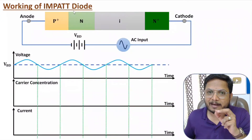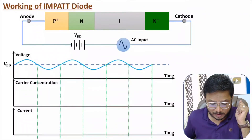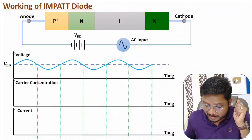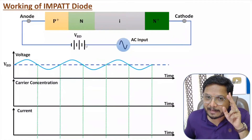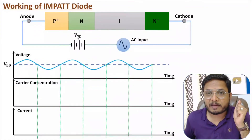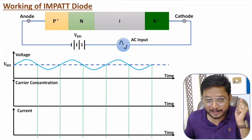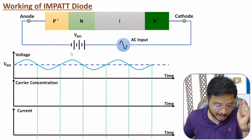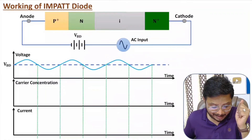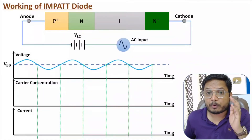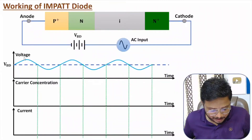The working of IMPATT diode is in reverse bias breakdown region. The anode is connected to the negative terminal of the DC battery and the cathode to the positive terminal — that is reverse bias. The biasing voltage is the breakdown voltage VBD, so the diode is biased on the verge of breakdown. An AC sinusoidal input is also applied; when the input goes below VBD, breakdown of the diode occurs.